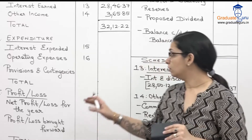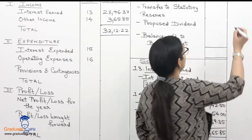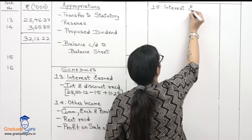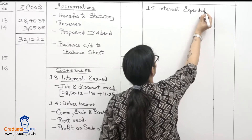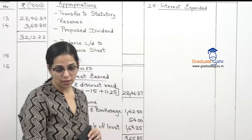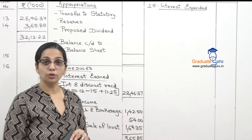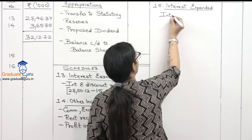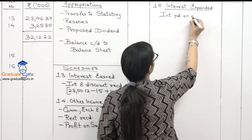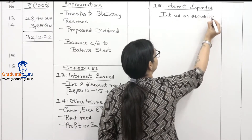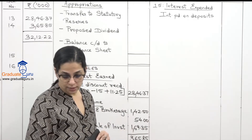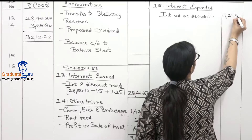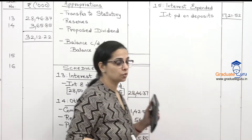Now we go to the expense side. First we have interest expended, schedule number 15. In interest expended schedule 15, we just have one amount given — interest paid on deposits — and there is no adjustment for that. So I'll directly take that amount: interest paid on deposits is 1,721,520, so that is 1721.52. That's our interest expended.